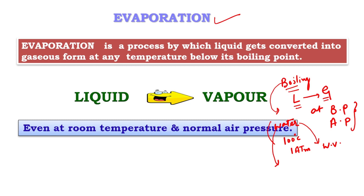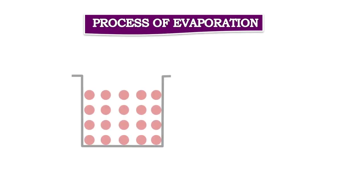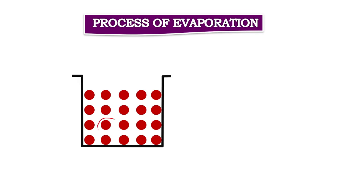Now we will discuss this process in depth. Suppose I have here a liquid beaker — these are liquid particles. You will see that liquid particles are in motion; they are not fixed. Due to this motion, there is a collision between the particles. Due to this collision, the speed and motion of particles are different.